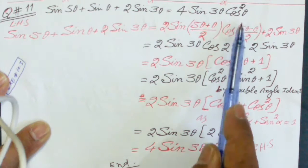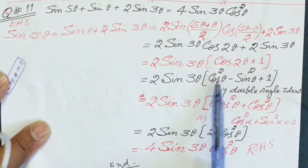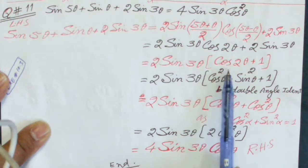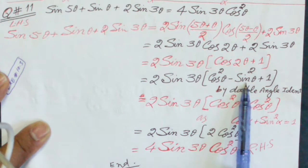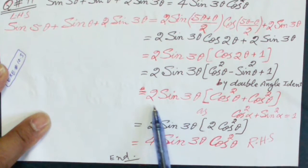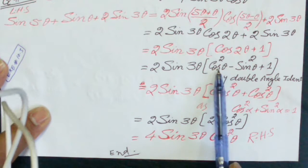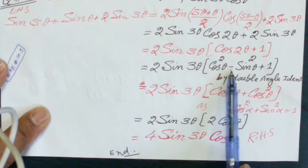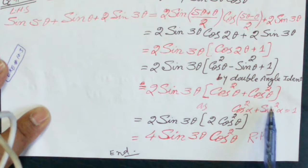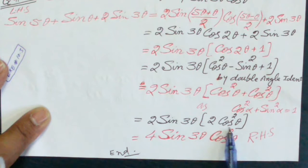So we convert 2 theta into theta by applying the double angle identity. We get 2 sine 3 theta multiplied by (cosine squared theta minus sine squared theta plus 1). By the double angle identity, this becomes 2 sine 3 theta multiplied by (cosine squared theta plus (1 minus sine squared theta)), and using the Pythagorean identity, 1 minus sine squared theta equals cosine squared theta.